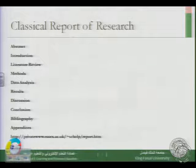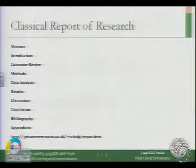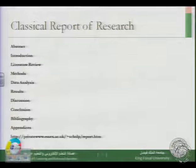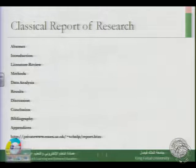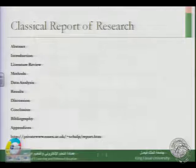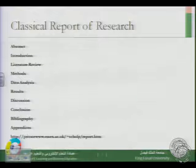In the next class, we will talk about the classical report of research: abstract, introduction, literature review, methods, data analysis, results, discussion, conclusion, bibliography, and appendices. There is a link provided to a world-famous researcher who has many articles and books about research and explains this classical report structure. We will visit that link from time to time to understand the meaning of abstract, introduction, and more. See you in the second lecture — thank you for listening.